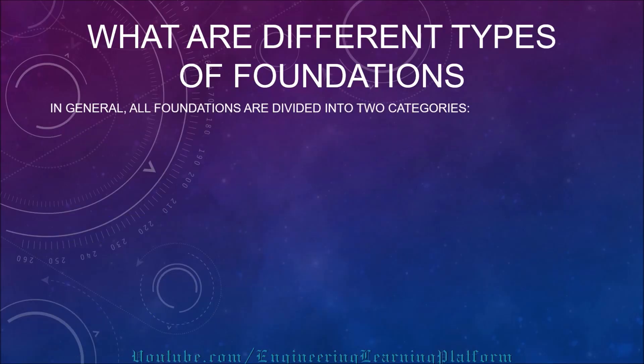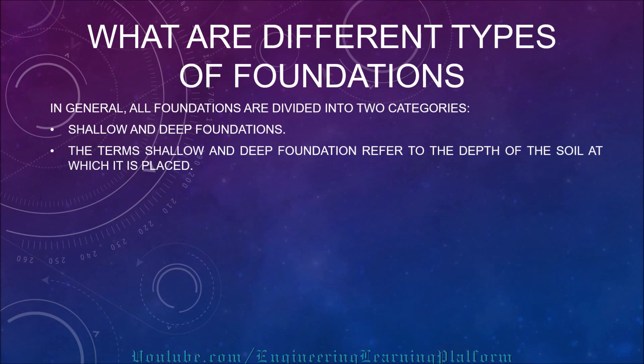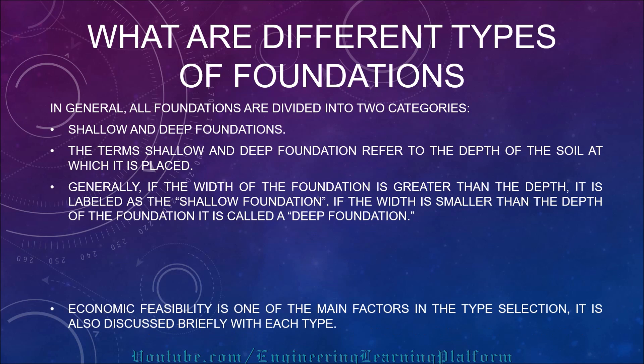What are the different types of foundation? In general, all foundations are divided into two categories: shallow foundations and deep foundations. The terms shallow and deep refer to the depth of soil at which the foundation is placed. Generally, if the width of the foundation is greater than the depth, it is labeled as a shallow foundation. If the width is smaller than the depth, it is called a deep foundation.